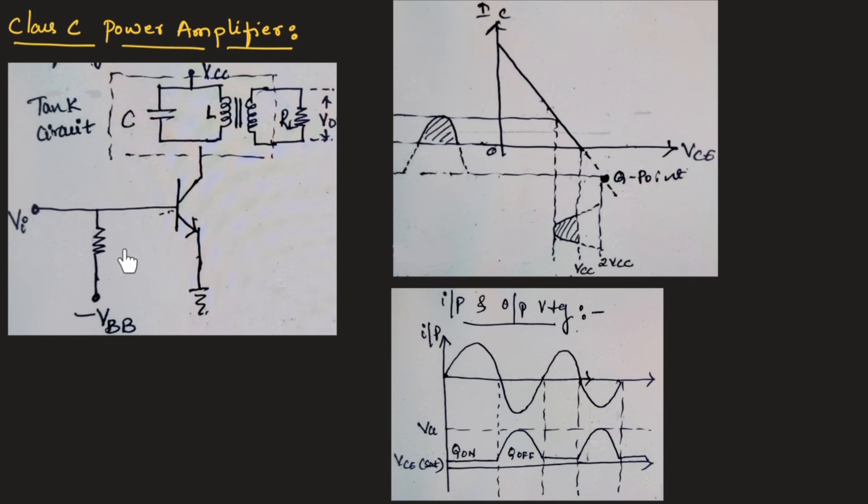You need to remember that in a class C power amplifier, the transistor is on for less than half of the cycle, which is less than 180 degrees of the input signal, which is applied.